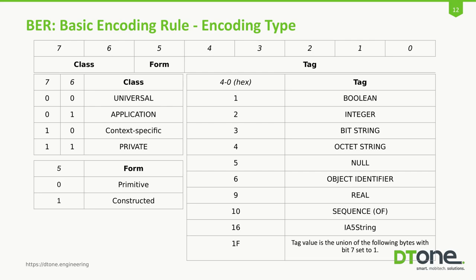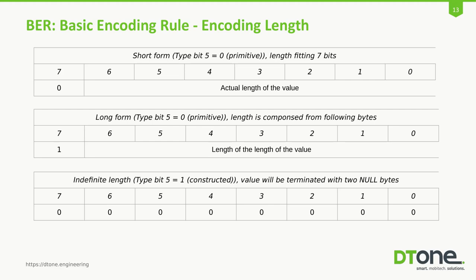The length can be encoded in three different ways. If you can fit the value of length into seven bits, you set the eighth bit to zero and use the rest of the byte to encode the value. If you cannot fit it, you set the eighth bit to one and the rest indicates the number of bytes that follow and will encode the value. In cases where you have constructed types, the last two bytes of the value will be two null bytes — a null byte being a byte with all zeros.